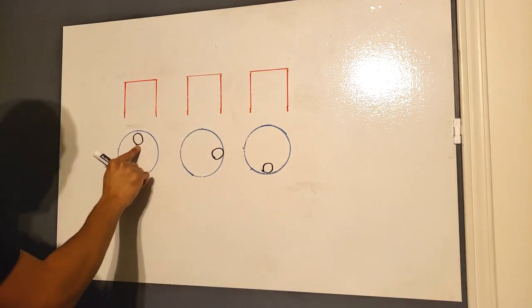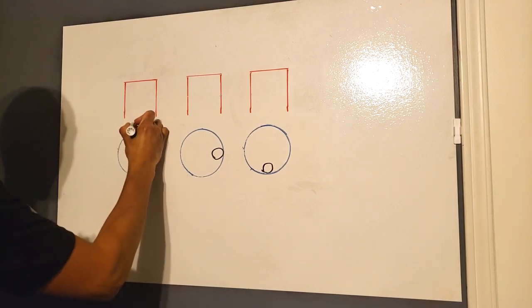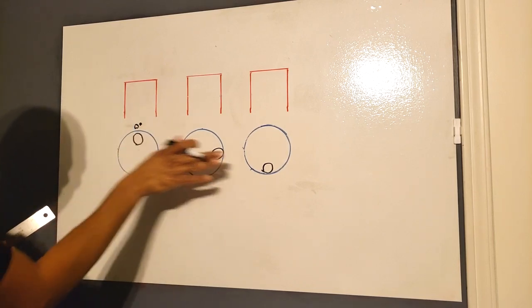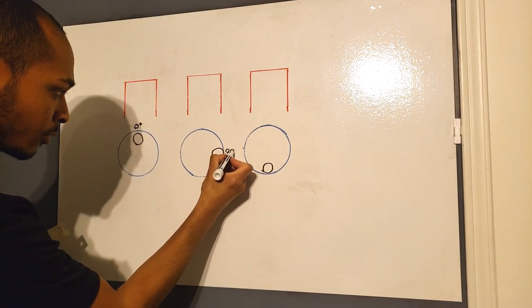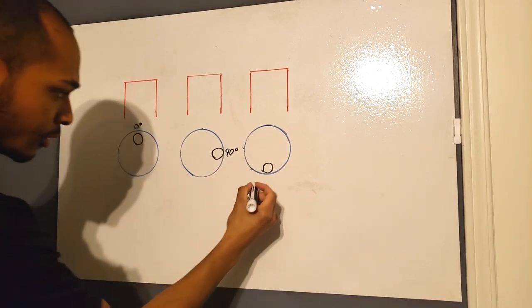And these black circles are your crank pin. So this is TDC, so zero degrees. This is 90 degrees and this is 180 degrees.